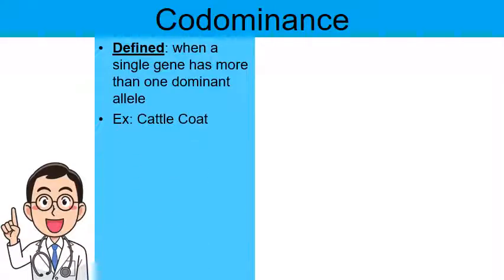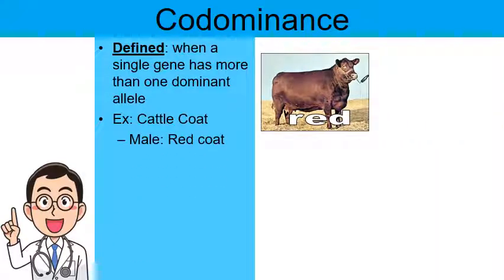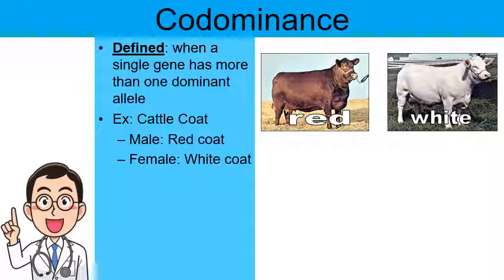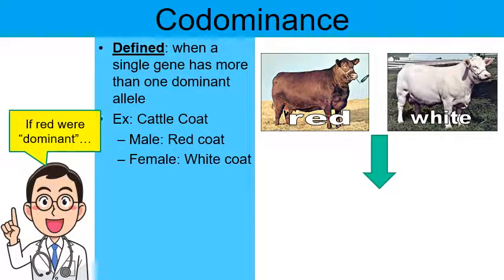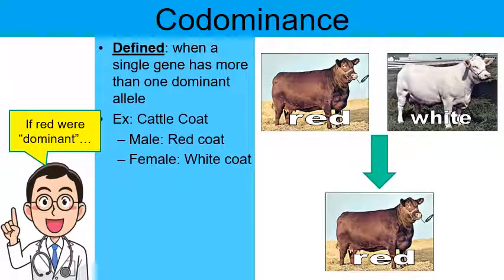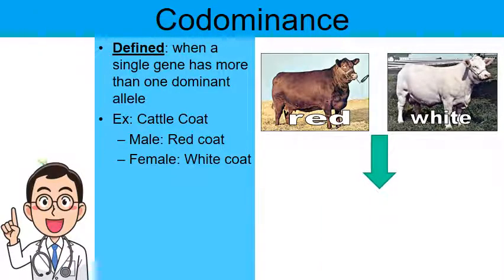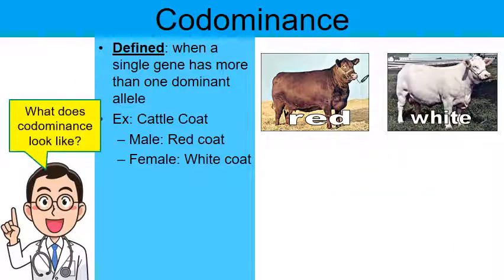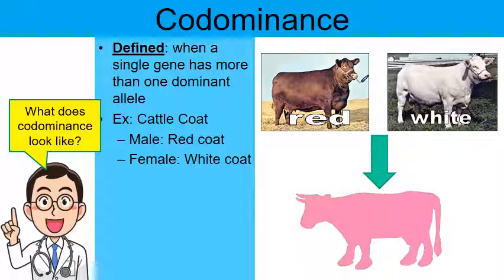A good visual example of codominance is cattle coat color. Pretend we have a male cow with a red coat and a female cow with a white coat. If they were to reproduce, what color offspring would we see? If red were dominant, you'd predict red offspring. If white was dominant, you'd predict white offspring. With codominance, do red and white blend together to make pink? As adorably cute as that would be — newborn baby cows with pink fur — no, that's not what codominance is.